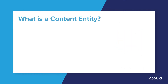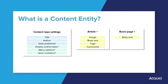All content types have common data attributes: title, author, and date published. All content types also have common settings to control whether additional information is collected. These common settings include whether or not to display the author and date published, various menu options, and the ability to save revisions, among other common settings.